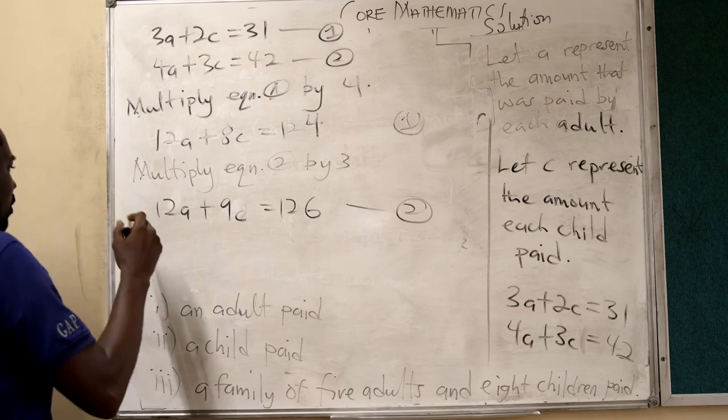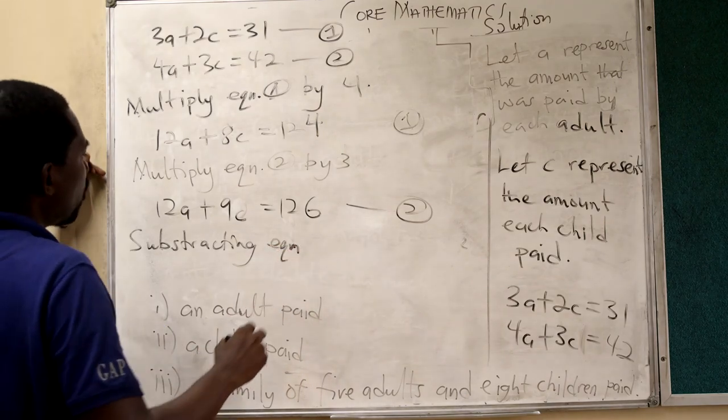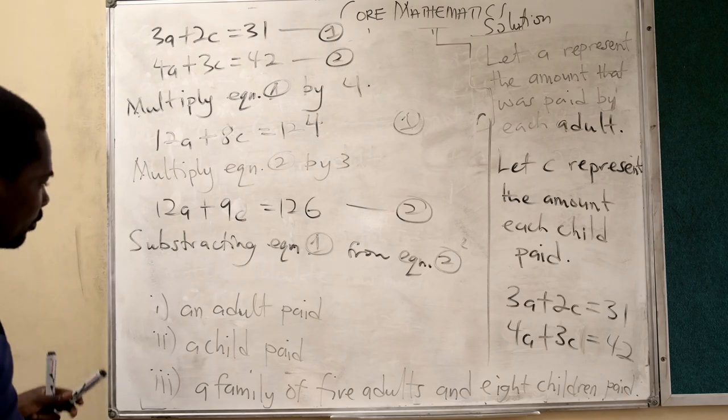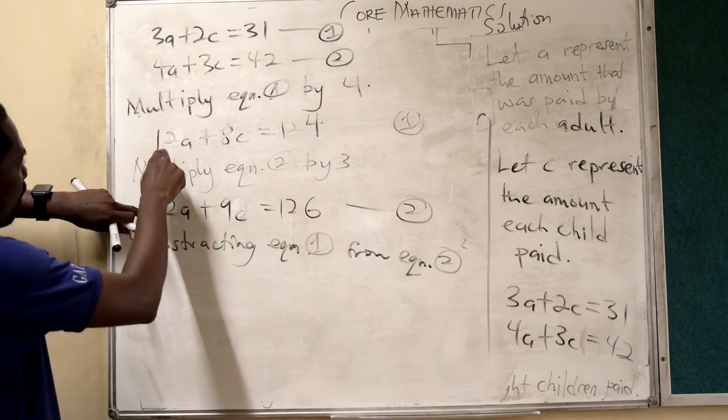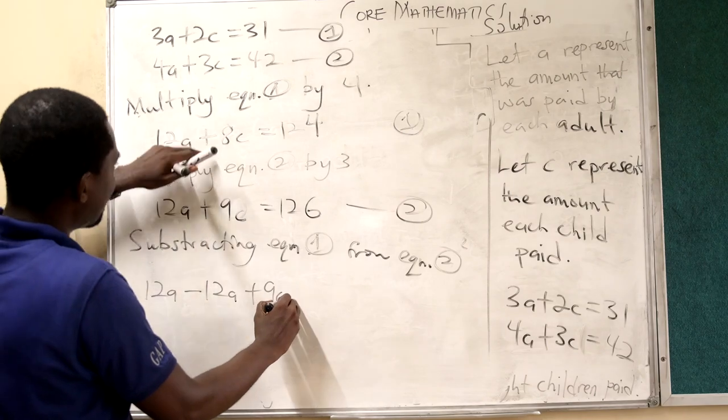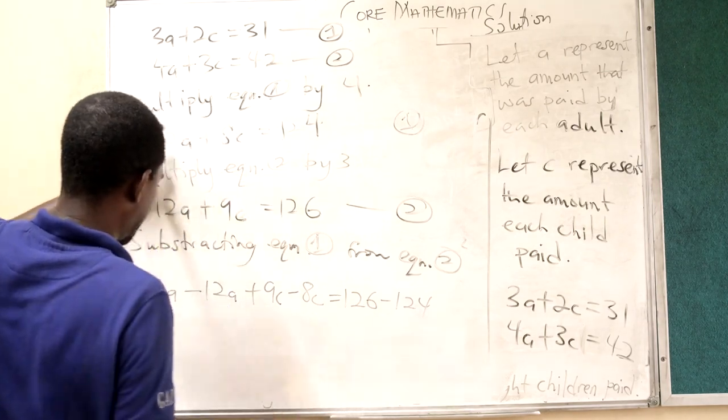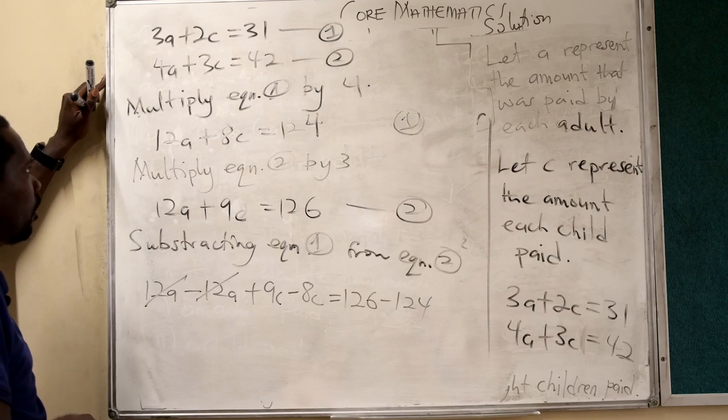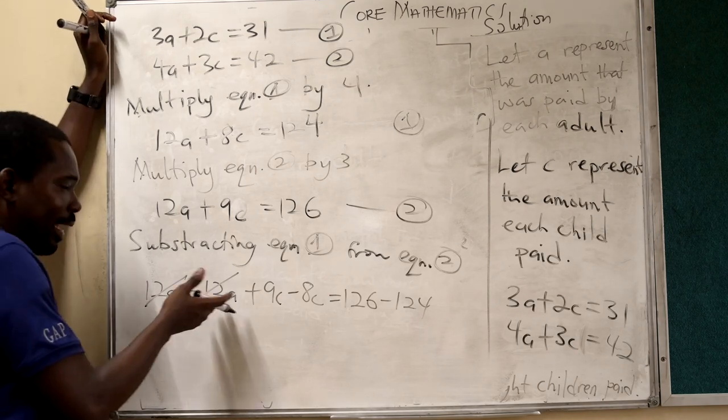Now, when I subtract the equations, subtracting equation 1 from equation 2. I am going to have 12A minus 12A. 126 minus 124. 12A minus 12A is 0. And this is the reason why I had to multiply equation 1 by 4 and also equation 2 by 3 so that A will be eliminated. Now A is eliminated.